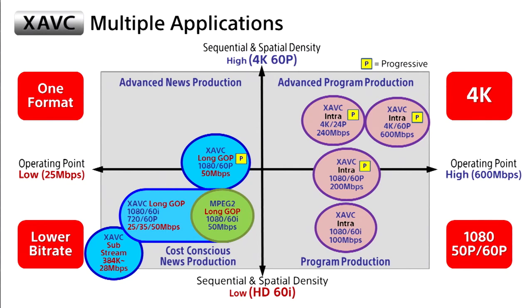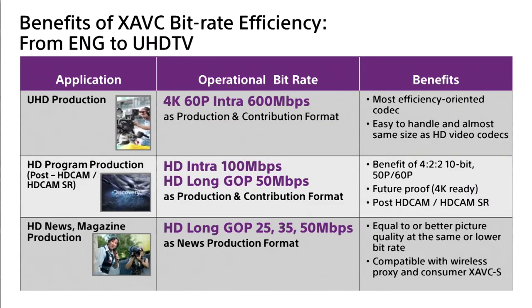In Hollywood, most studios use raw recording, but the file sizes are large. With XAVC, we can do 4K 24 frames per second at 240 megabits per second — very manageable file sizes, all progressive. There are three directions or trends around the world: ultra-high definition production, conventional broadcasting production, and news and magazine production.